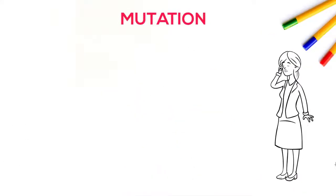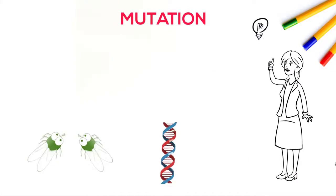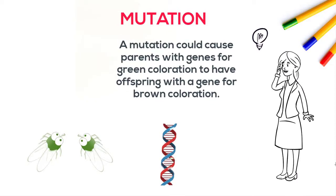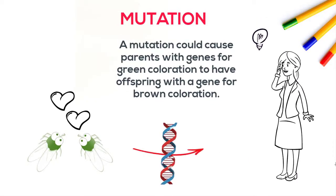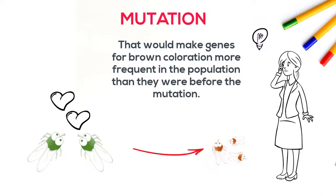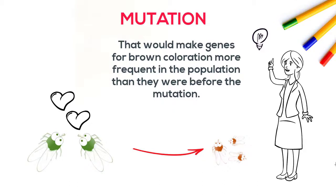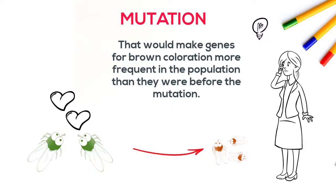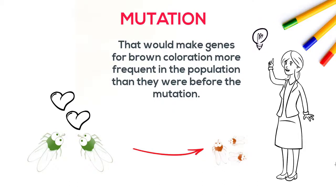A mutation could cause parents with genes for green coloration to have offspring with a gene for brown coloration. That would make genes for brown coloration more frequent in the population than they were before the mutation occurred.